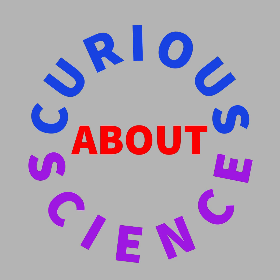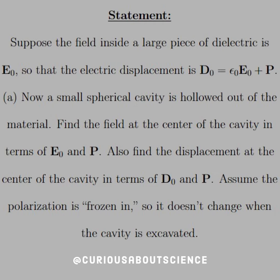Welcome back! Our statement reads, suppose the field inside a large piece of dielectric is E0, so that the electric displacement is D0 equal epsilon0 E0 plus P.